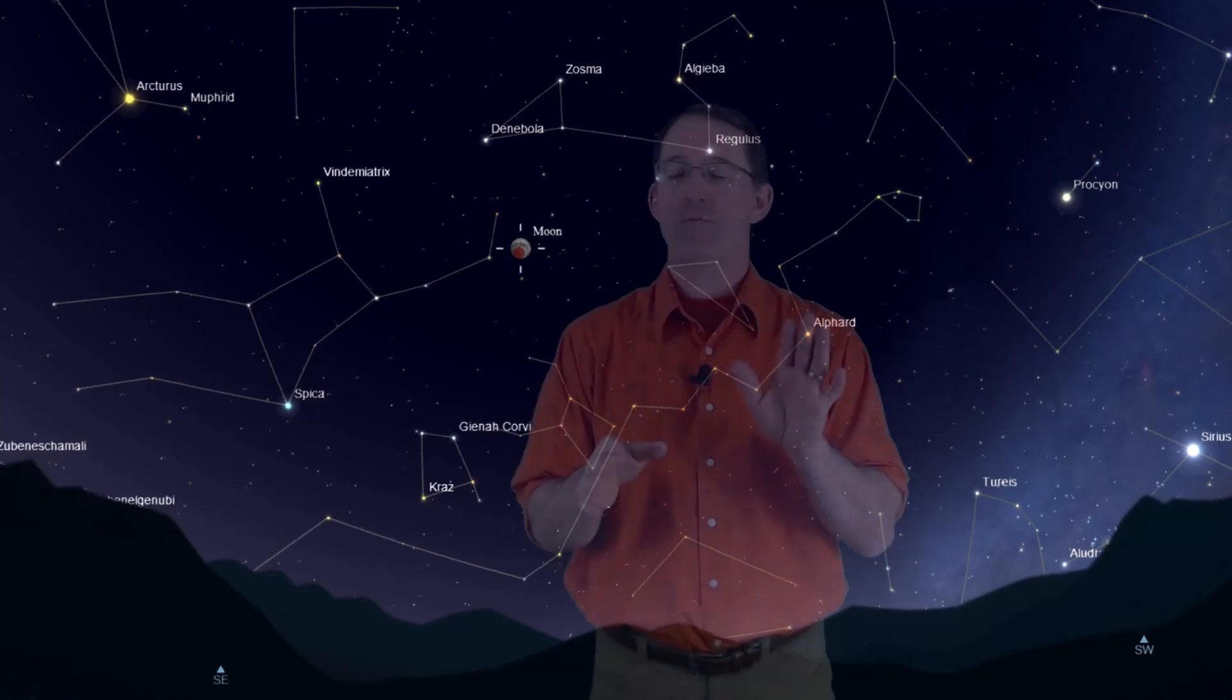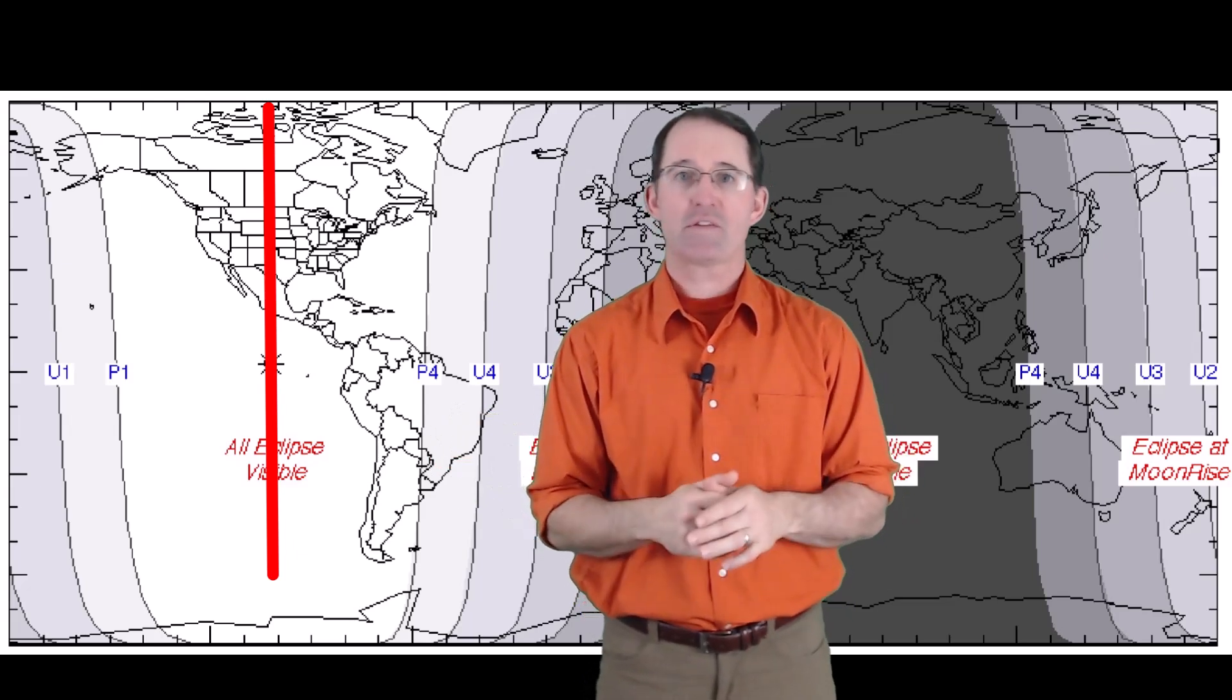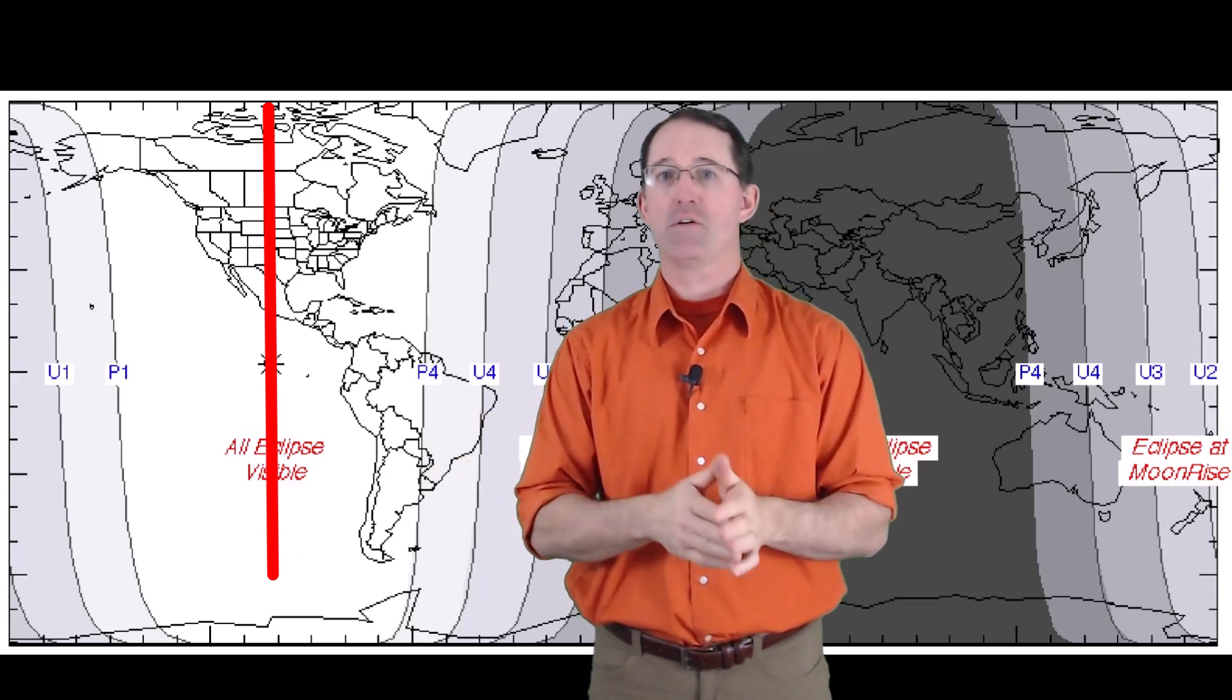Thankfully the full moon in March is not as high up in the sky as it is at other times of the year. The moon will be 55 degrees up above the horizon along the locations marked on that map, but if you live east or west of that line, the moon will be lower in the sky during the total phase of the lunar eclipse.